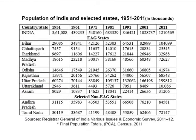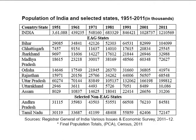The other EAG states that figure in the ten most populous states of the country are Bihar at 104 million, Madhya Pradesh at 72.6 million, and Rajasthan at 68.5 million. The population of the eight EAG states comprised nearly half — that is, 45.9% — of the country's population in 2011.